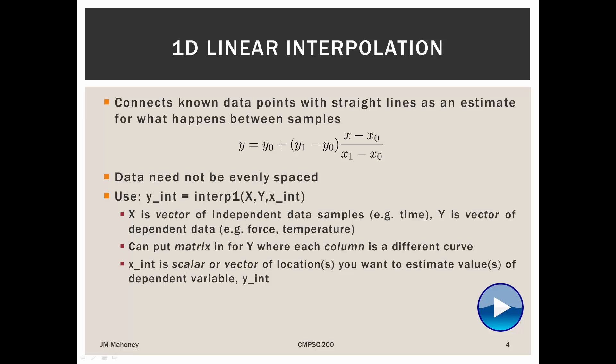And then the third argument, this x underscore int, those are the, in this example, time locations that we want to interpolate at. So let's say we're interested at 1.5 minutes, then 1.5 is what we would put into that third argument there. And then what it gives us out is the linear interpolated estimate to our dependent variable. So the estimate as to what was the temperature at that specific time that we did not actually measure in our experiment.